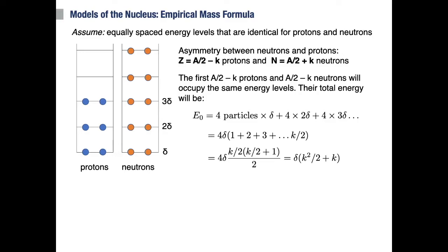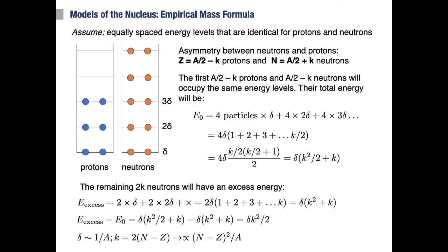Now we have 2 times k extra neutrons to distribute to the remaining cells. Following a similar argument, we'll have 2 neutrons in the first level above the previous, 2 neutrons in the second level, and so on. So 2 times delta times 1 plus 2 plus 3 plus k terms, which equals delta times k squared plus k. The extra energy will therefore be proportional to the difference, which turns out to be equal to delta times k squared divided by 2.